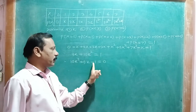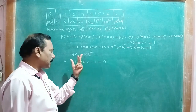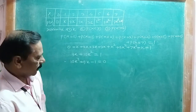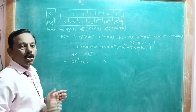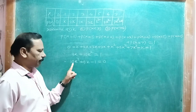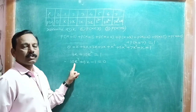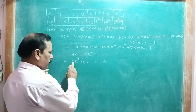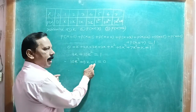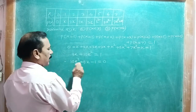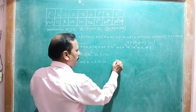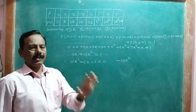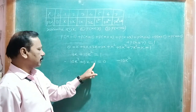When one sign is transferred to the other side, the sign changes. So we have 10k² + 9k - 1 = 0. We solve this quadratic equation using the factorization method: multiply the first term and last term — 10k² × (-1) = -10k².